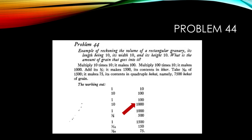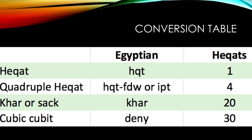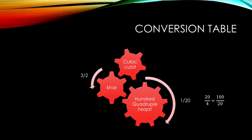Then we need to go from cubits to Khar. As we see in our table, a cubit has 30 Hekat and a Khar has 20. So to convert cubits to Khar you need to multiply by one plus one half.